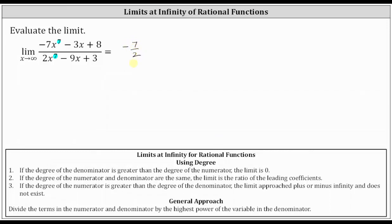Let's also find this limit using a second method, which is a more algebraic approach. The general approach is to divide the terms in the numerator and denominator by the highest power of the variable in the denominator. Well, x to the seventh is the highest power of the variable in the denominator, and therefore we divide every term in the numerator and denominator by x to the seventh.